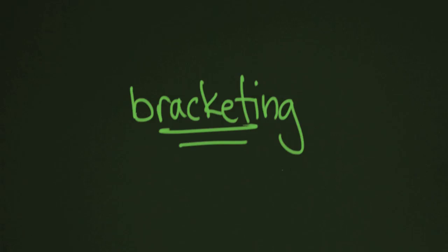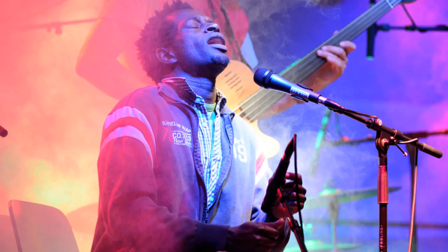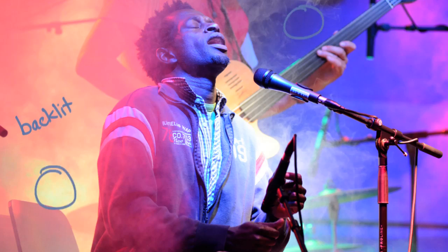Bracketing is one way to ensure you're getting the right exposure. The best way to explain this is with an example you might recognize from the metering lesson. This scene is backlit, which often happens when you're shooting something like a concert. You have lots of different light sources, and your camera is looking at all of this and trying to make 18% gray — but over here you've got 0% gray, and over here maybe 90% gray.